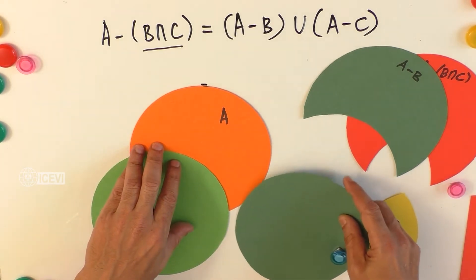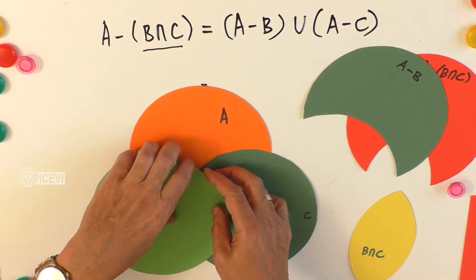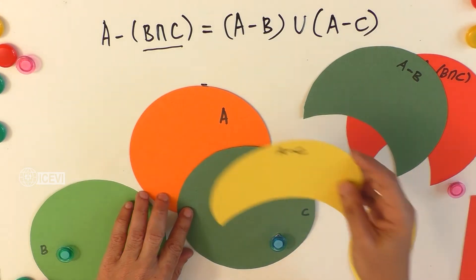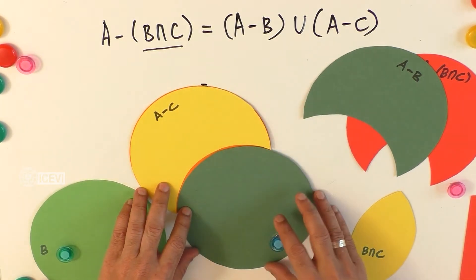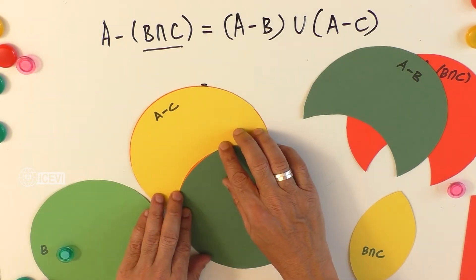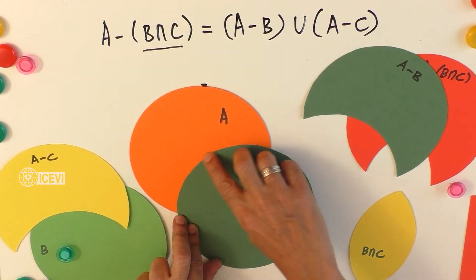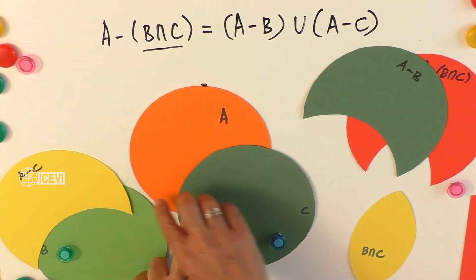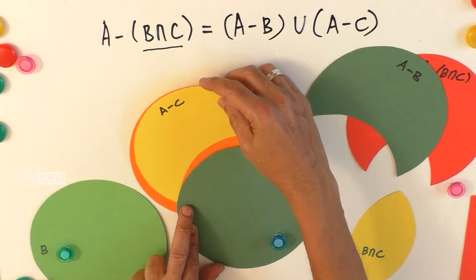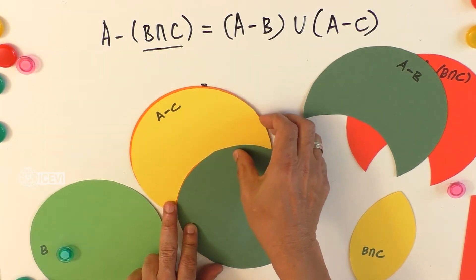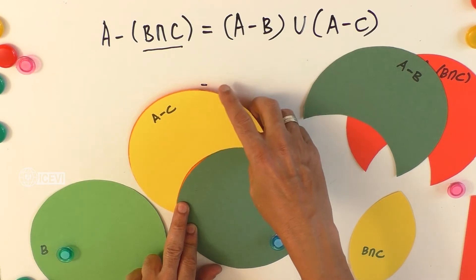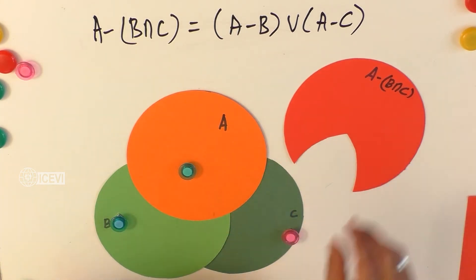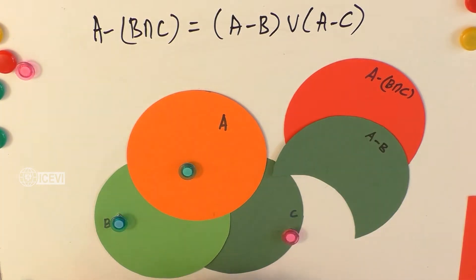Now we can take C back and bring B down. Let us find out the area of A which is not in C — the portion above circle C, the portion of A which is not covered in C. That portion is nothing but the portion which we have cut. Let the child explore A minus C. With the use of the three sets A, B, and C, we have come up with A minus B intersection C, A minus B, and A minus C.